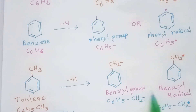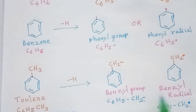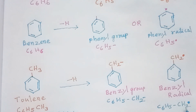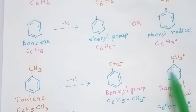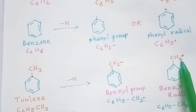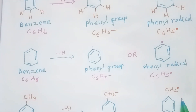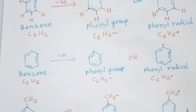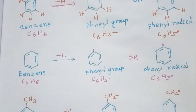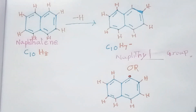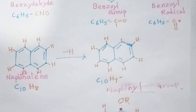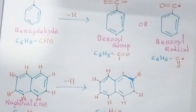We can also represent this as a radical: C6H5CH2 with a radical dot on the carbon atom. This is the benzyl radical. So we have now seen two aryl groups or radicals. Let us see another aryl radical.